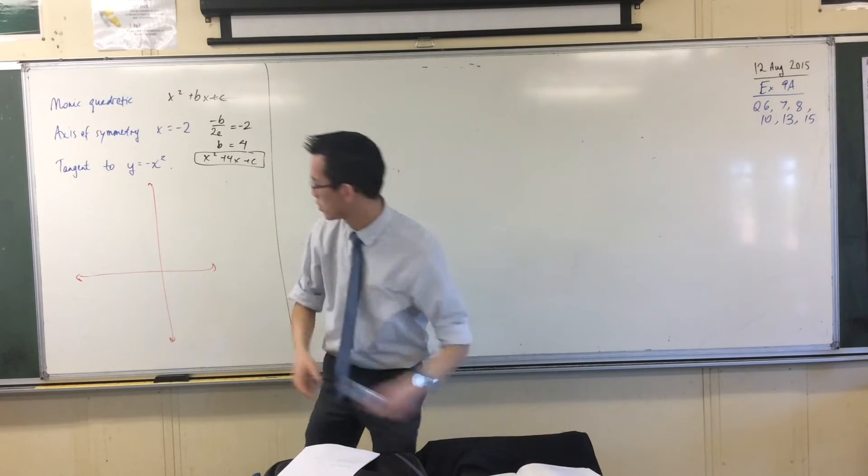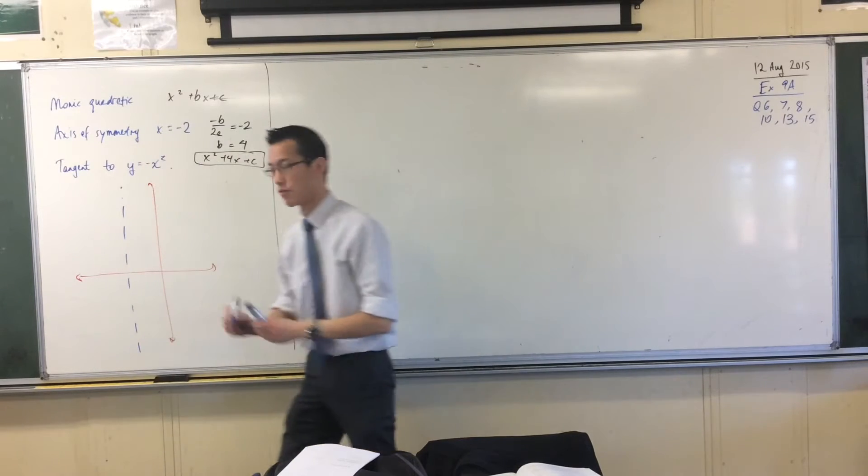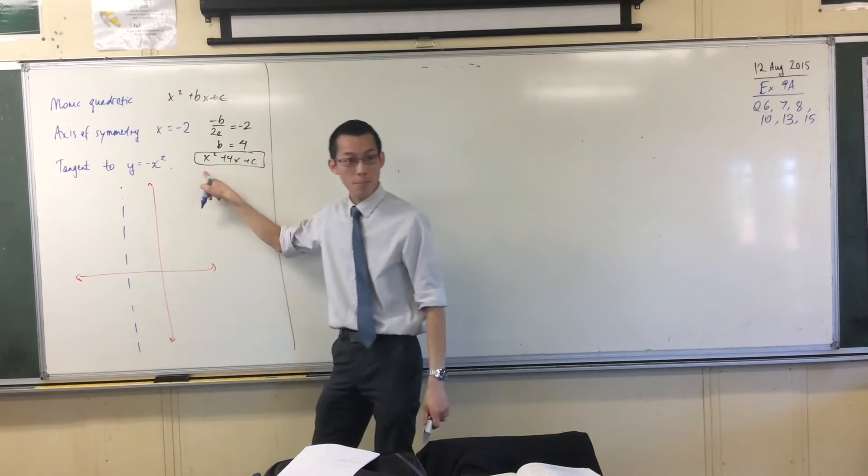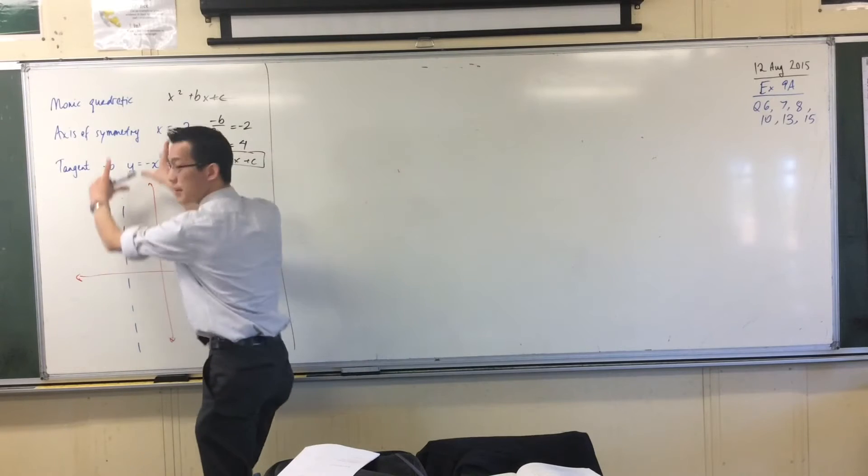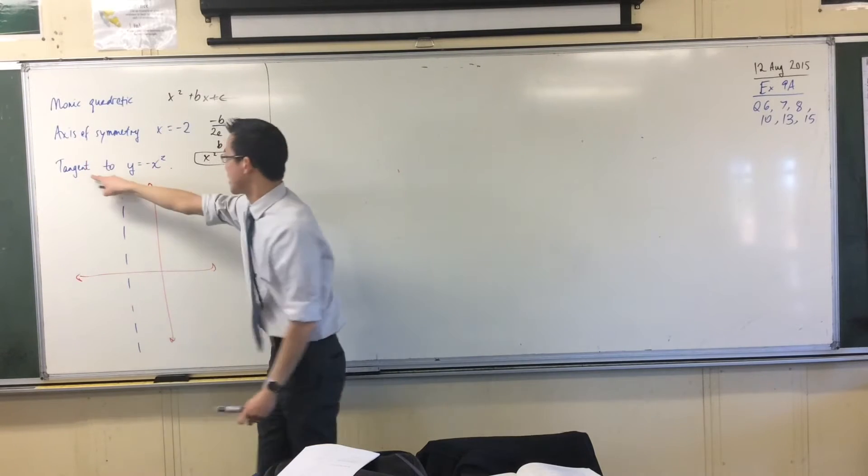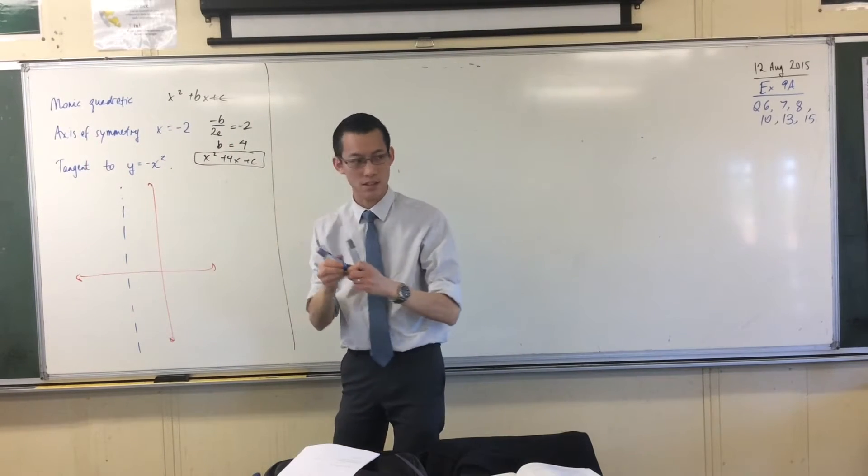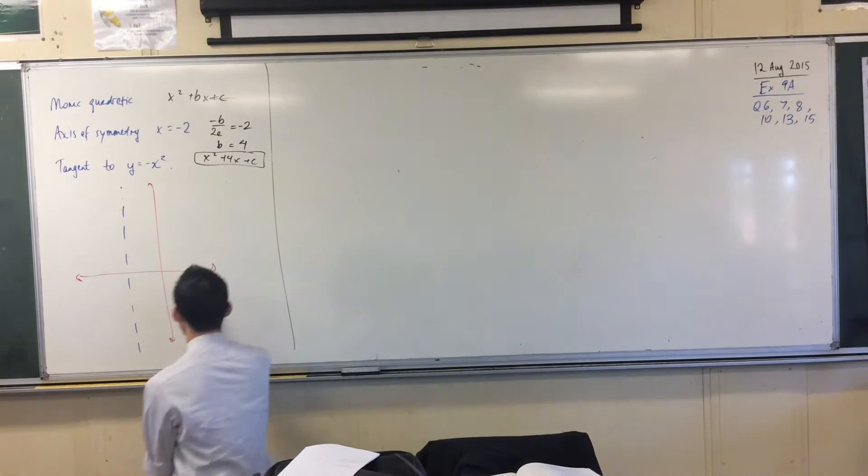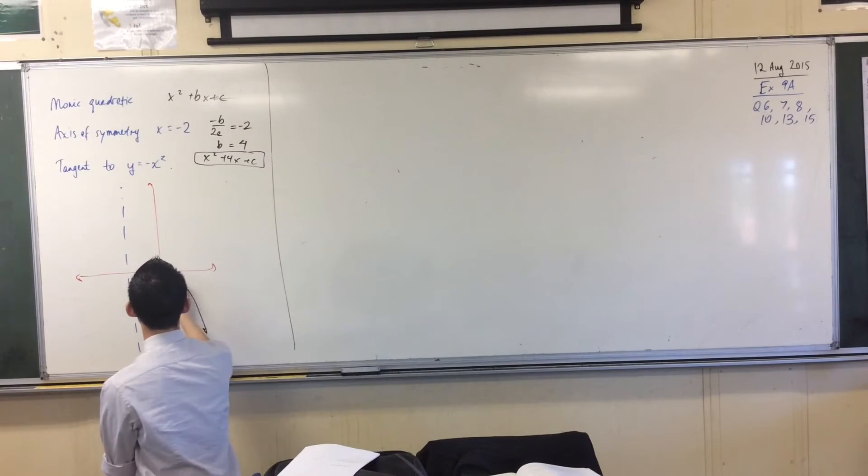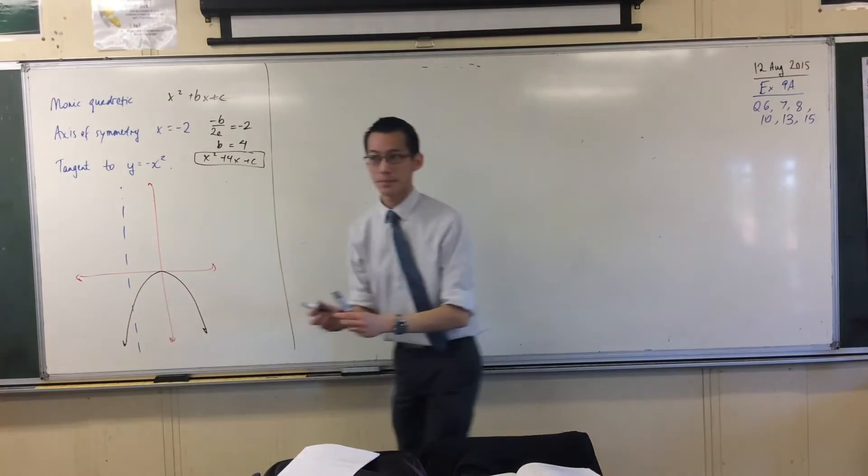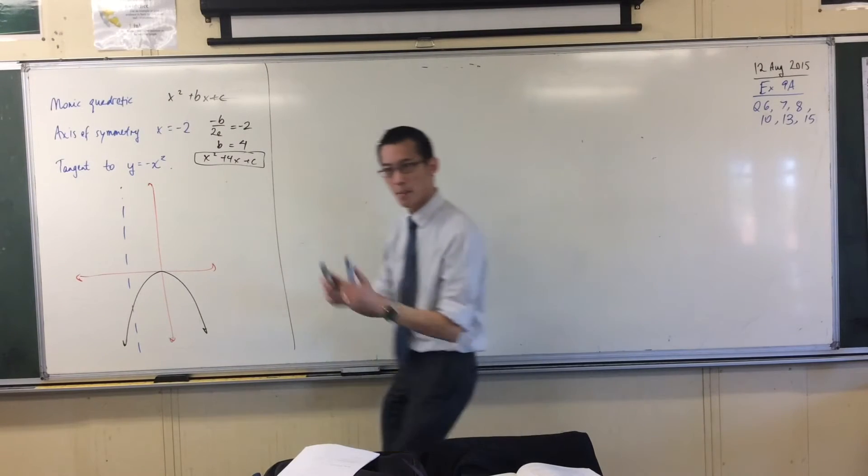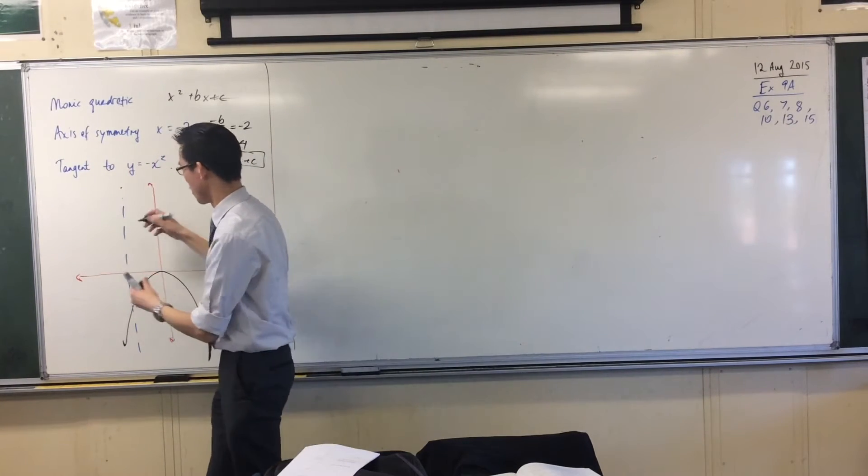So I'm going to be around here. So I have a concave up parabola and it's moving sort of up and down here. Now it's tangent to y equals minus x squared. So I've got this guy down here.